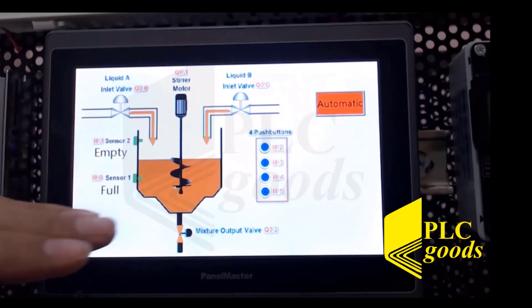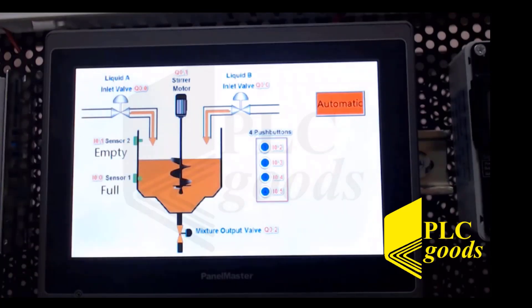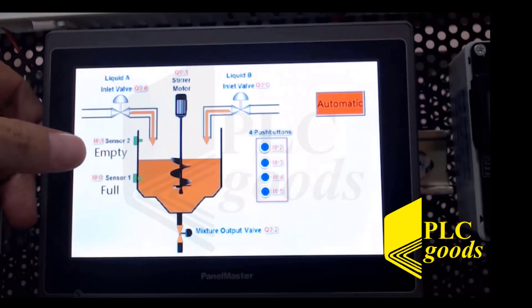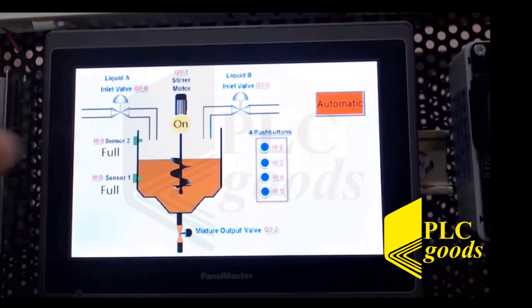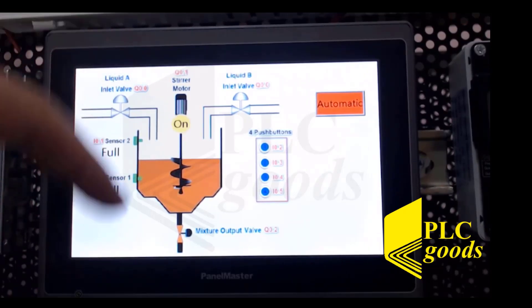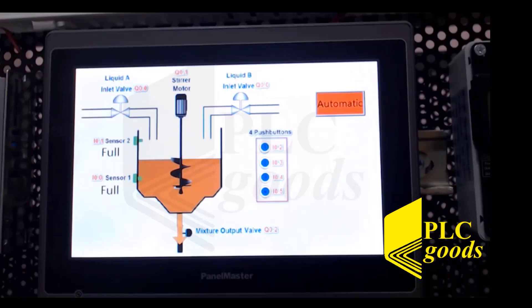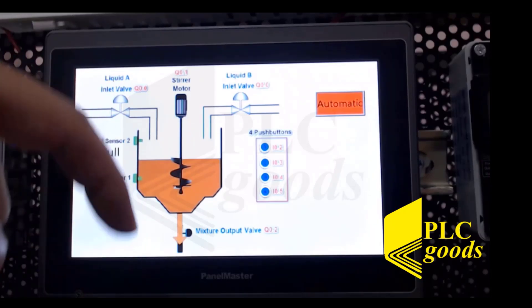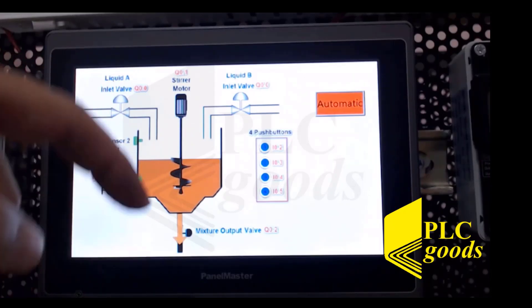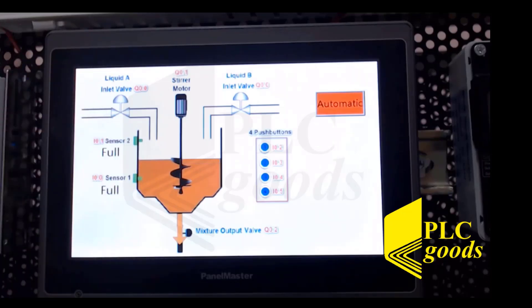That means the liquid level is still here. So push this to set it on. So you see automatically the steering motor is on and now the outlet valve is on. So the liquid is going out of the system.